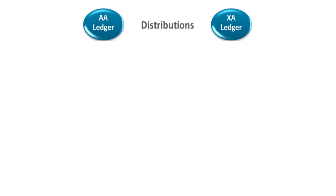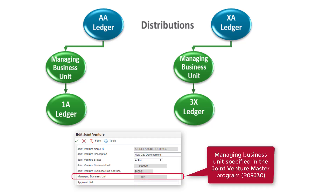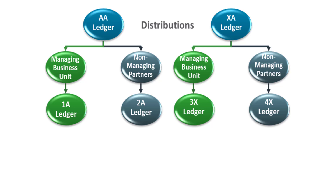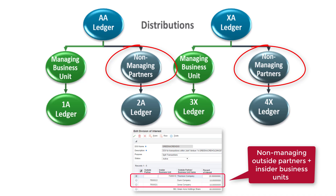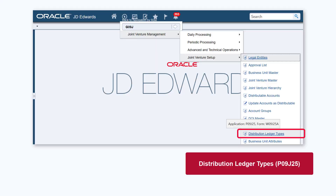For each source ledger type distributed within the joint venture management system, you can define two distribution ledger types: one to contain the transactions and balances for the managing business unit's share, and another to contain the summarized transactions and balances for all non-managing partners. Non-managing partners include outside partners and insider business units that do not manage the joint venture. To use this functionality, you must first define the distribution ledgers.